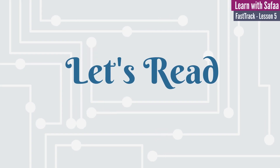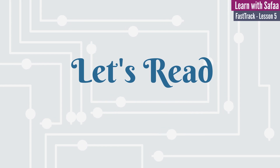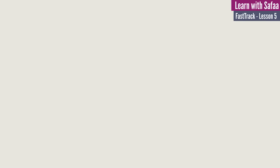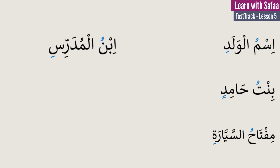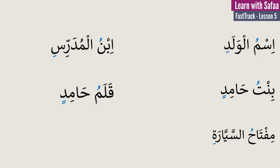Now let's try reading some sentences with the vowel marks. The first one: ism al-waladi. The second one: bintu hamidin. The third one: miftah al-sayyarati. The fourth one: ibn al-mudarrisi. The fifth one: kalamu hamidin.